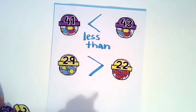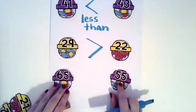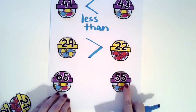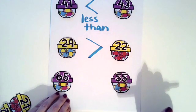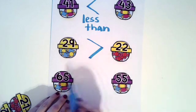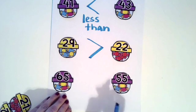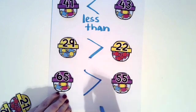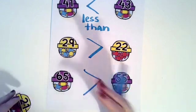One more. 65 greater than or less than 55. Show me with your hand. 65 has six tens. 55 has five tens. I know six is greater than five. So you should have the claw opening wide.